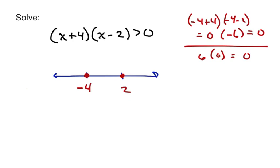Now this is called a sign chart, so I want to check out each of the intervals we have here. We have three different intervals. On this first interval, this very negative interval, I'm just going to pick a very negative number like negative a billion and plug it in. Negative a billion plus 4 is still negative, and negative a billion minus 2 is also negative. Taking a negative times a negative, that product will end up being positive.